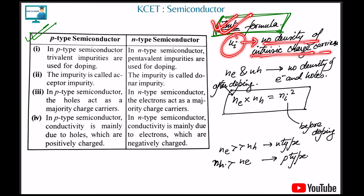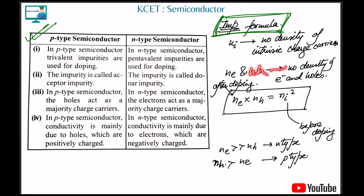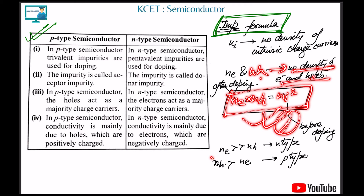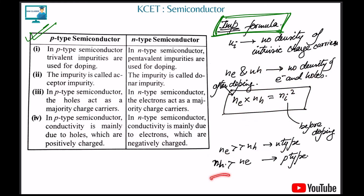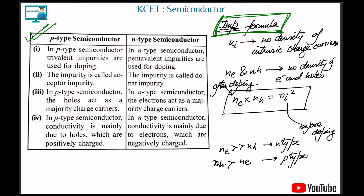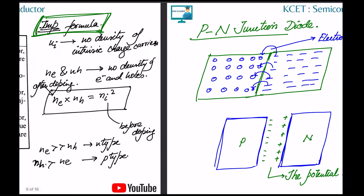This formula is very important: ni is the number density of intrinsic charge carriers — meaning before doping, the total number of electrons and holes together. After doping we have ne (electrons) and nh (holes), and the relation is ni² = ne × nh. If the number of electrons is more than holes, it's n-type; if holes are more than electrons, it's p-type. This formula and concept is the key takeaway.